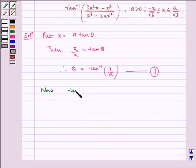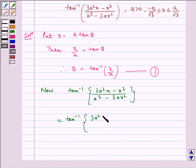Now, tan inverse of 3a square x minus x cube by a cube minus 3ax square is equal to tan inverse of 3a square, putting x equals a tan theta. Then a tan theta whole cube, whole divided by a cube minus 3a into a tan theta the whole square.